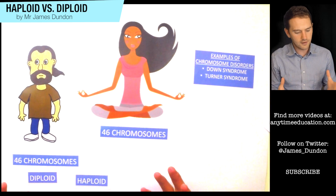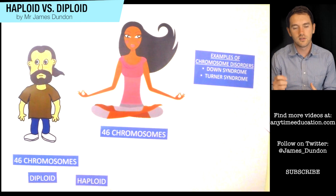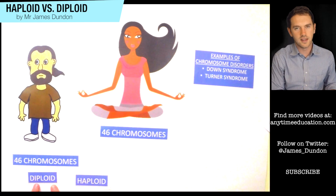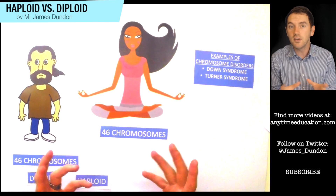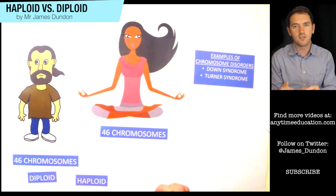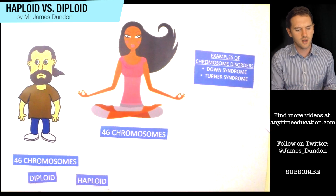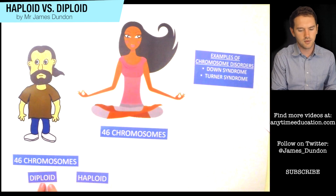All you have to ask yourself is: does my cell have its homologous pair? Do we have two chromosomes that are homologous pairs? Then they're diploid. If they only have one of the homologous pair — even if it's been replicated and looks like an X or a K shape — if it's just that one chromosome, it is still haploid. So make sure you ask yourself: does this cell have its homologous pair? No — haploid. Yes — diploid.